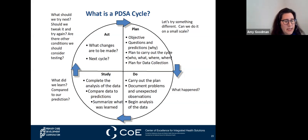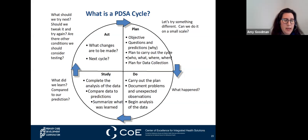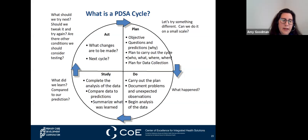When to use the PDSA: for trying changes to existing processes, trying new processes, trying new tools, trying new measures. A test or observation is planned including the plan for collecting data. Learning questions and predictions are part of that plan. The plan is attempted—that is the Do. Time is set aside to analyze the data and study the results, and the action is rationally based on what has been learned.